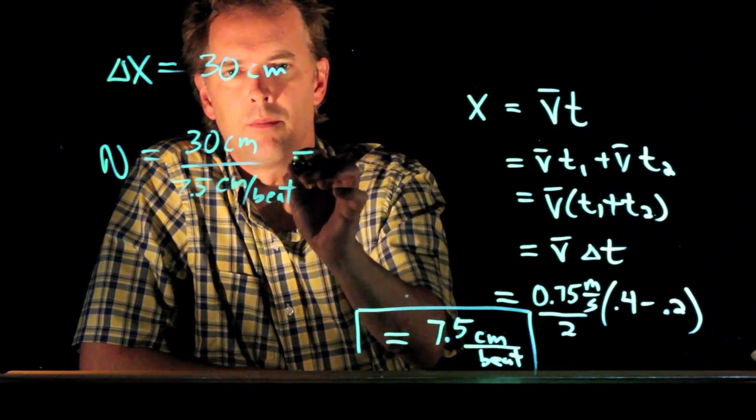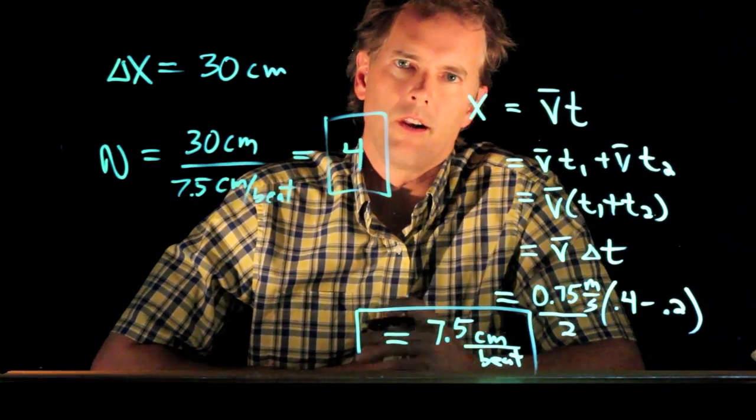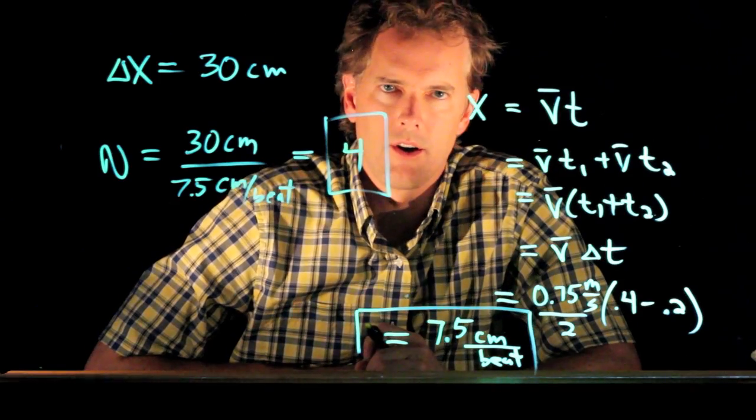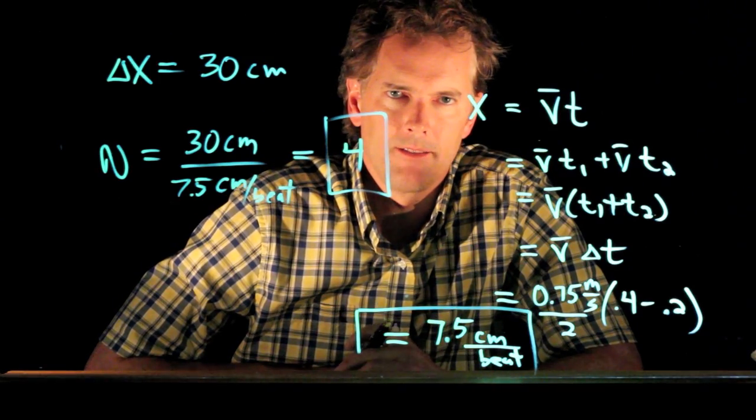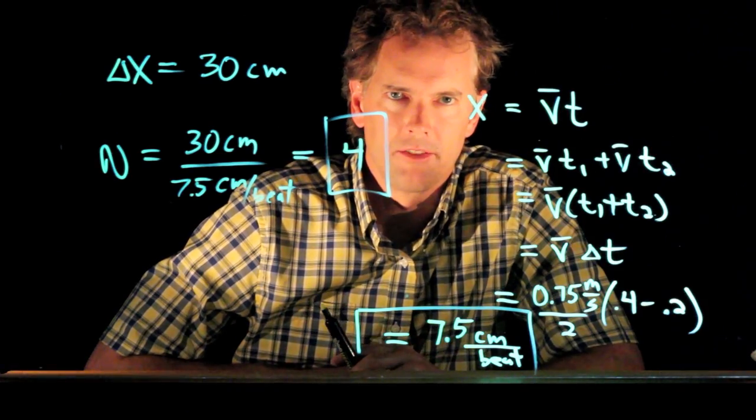30 over 7.5 is 4. So 4 beats of your heart, blood moves from your heart to your brain. All right? Hopefully the blood has moved to your brain and this is all clear to you now. If not, come see me in Office Hours. Cheers.